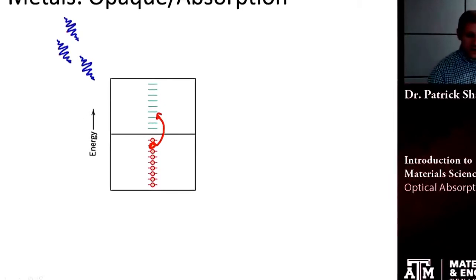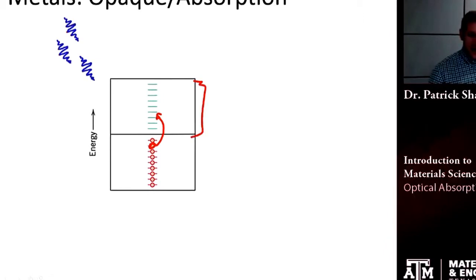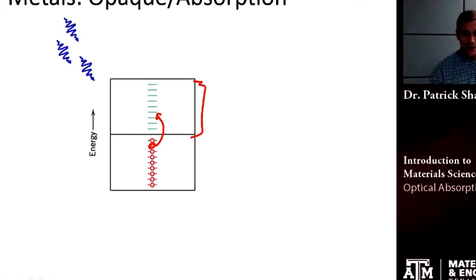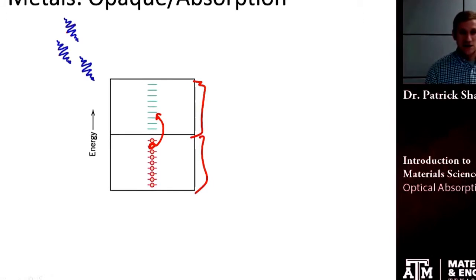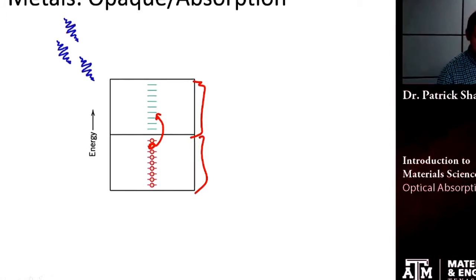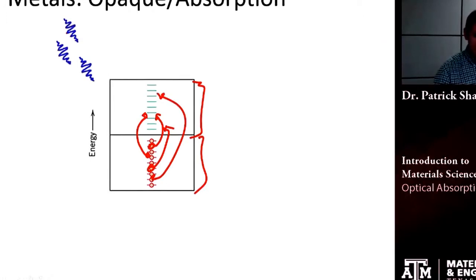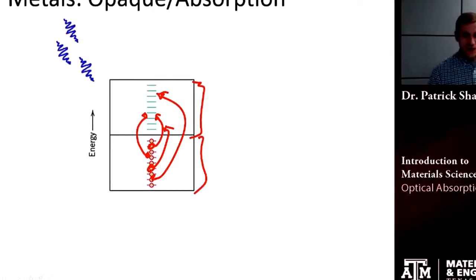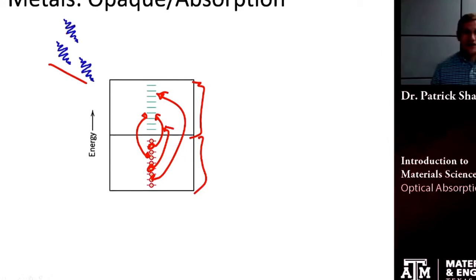Now remember, in metals there are all of these unoccupied states immediately above the occupied states. So it's really easy to find different electrons that will absorb into these states. And that's relatively independent of that wavelength of light.